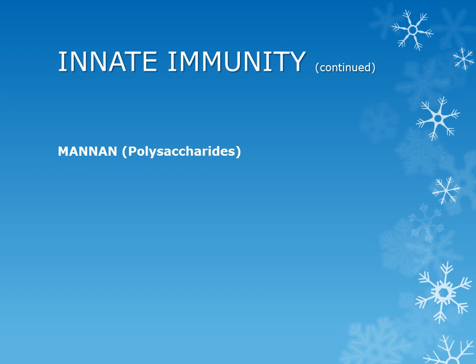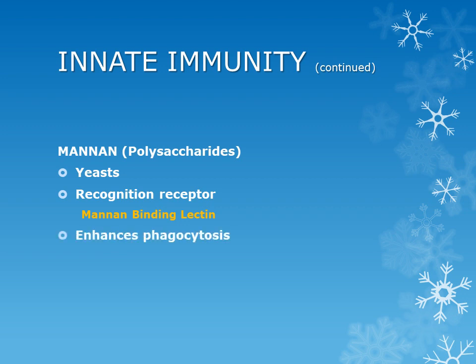The next important example of pattern recognition is mannose, which is a polysaccharide present in various important bacteria and yeast. Mannose or polysaccharide is recognized by a special receptor called mannose-binding lectin or mannose-binding protein, present on the surface of cells like macrophages and dendritic cells. When they bind to the culprit microorganism, it results in phagocytosis, and when the organism is phagocytosed, the complement cascade will be activated, leading to the death of the microorganism.